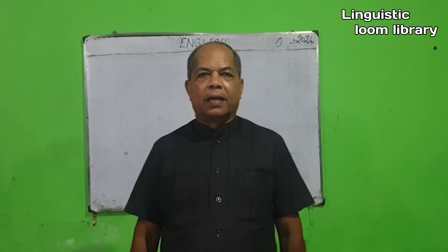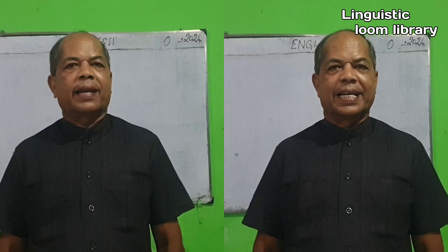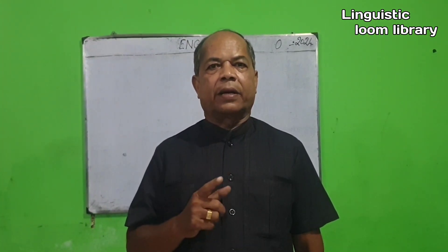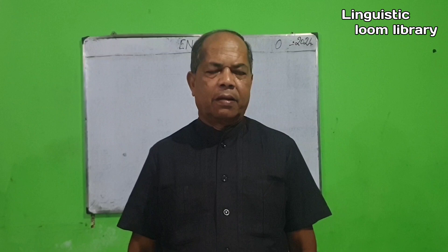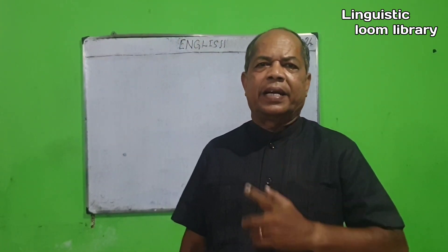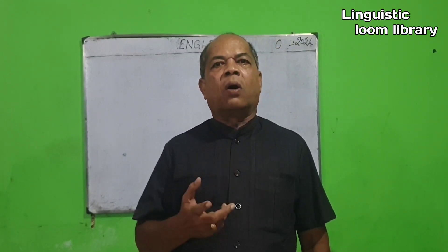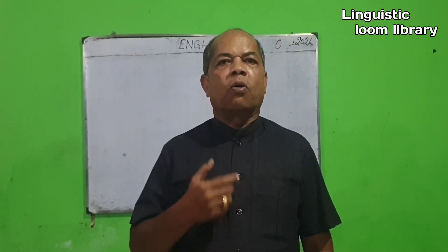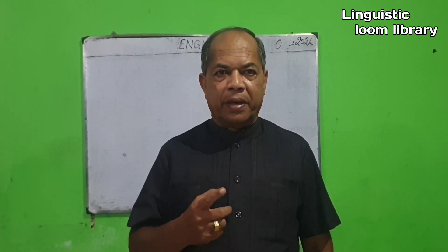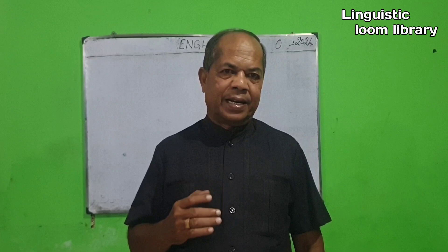Hi viewers, let us master the technique to find out the direct and indirect object. A noun can act as a direct as well as indirect object in a sentence. When does the question of direct and indirect object arise? When one or more nouns or one or more pronouns follow the verb, there comes the direct and indirect object in a sentence.